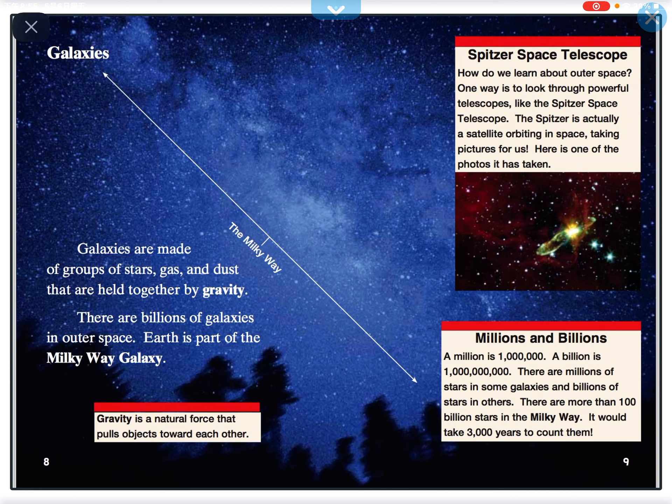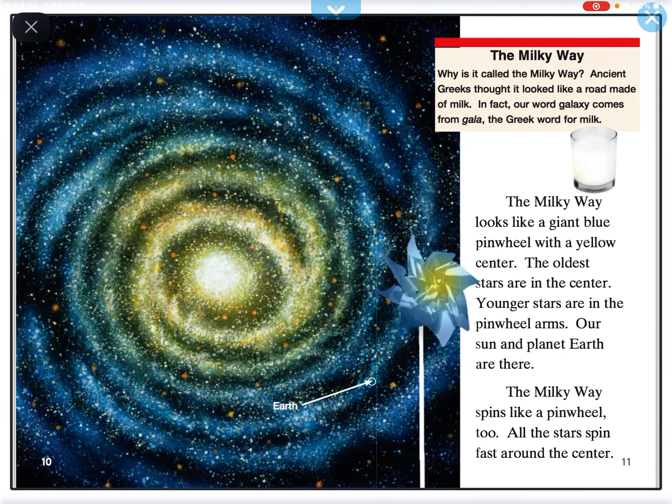Galaxies are made of groups of stars, gas, and dust that are held together by gravity. There are billions of galaxies in outer space. Earth is part of the Milky Way galaxy. The Milky Way looks like a giant blue pinwheel with a yellow center. The oldest stars are in the center. The youngest stars are in the pinwheel arm. Our sun and planet Earth are there. The Milky Way spins like a pinwheel too. All the stars spin fast around the center.